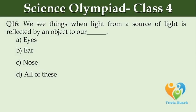We see things when light from a source of light is reflected by an object to our dash. Option A: eyes. Option B: ear. Option C: nose. Option D: all of these.